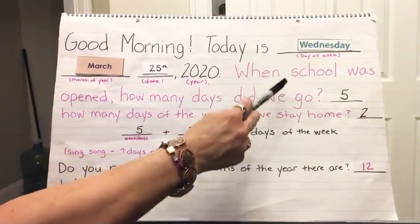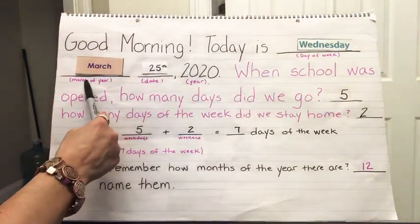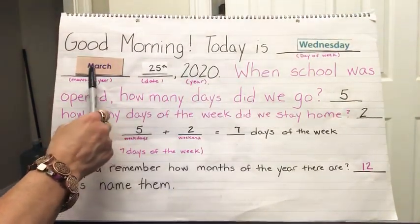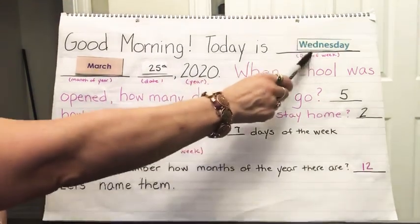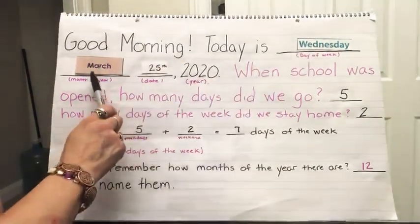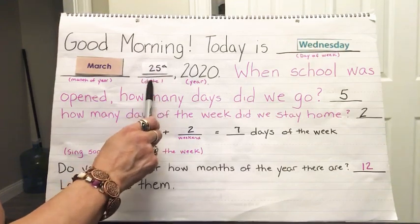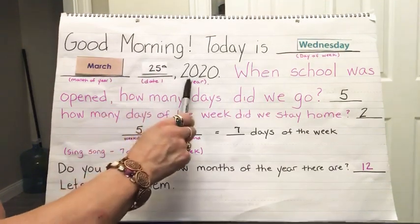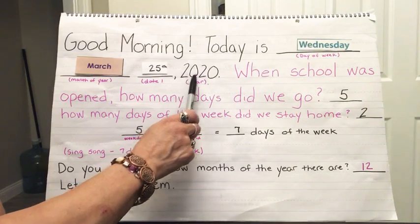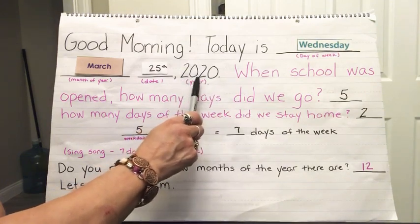Very good. Do you know the name of the month of the year? The name of the month of the year is March. Today is Wednesday, March 25th. And the year is — you all know that — 2020.